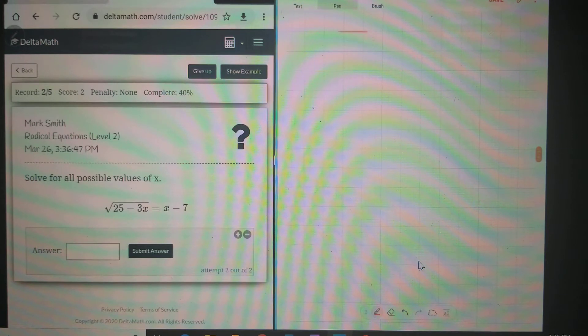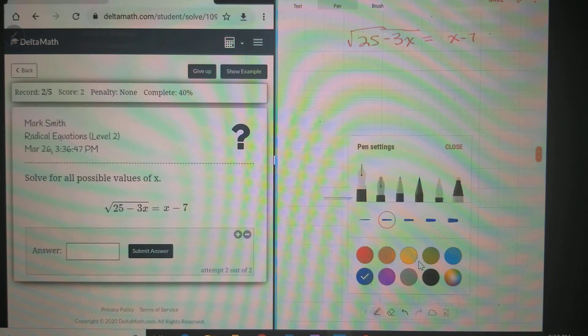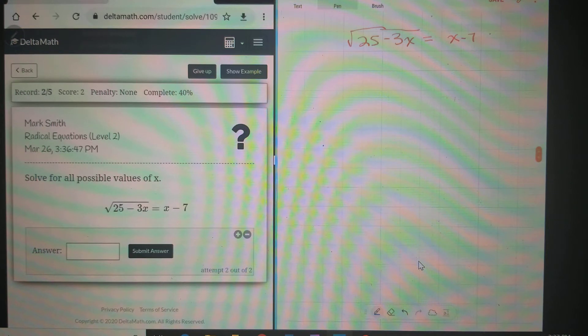We have this problem over here: √(25 - 3x) = x - 7. Alright, so how are we going to do this?